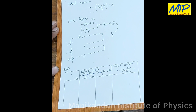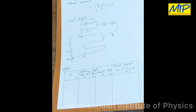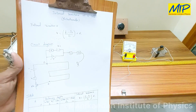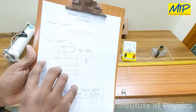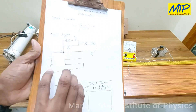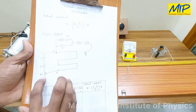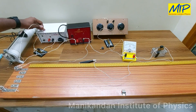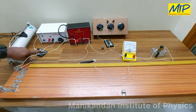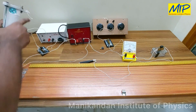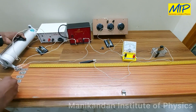Now I am going to explain the connections. The potentiometer has points A and B. From point A I connect to the positive terminal of the battery eliminator. From the negative end of the battery eliminator it is connected with key K1. From key K1 it is connected with the bottom end of the rheostat, and from the top end of the rheostat it is connected with point B.